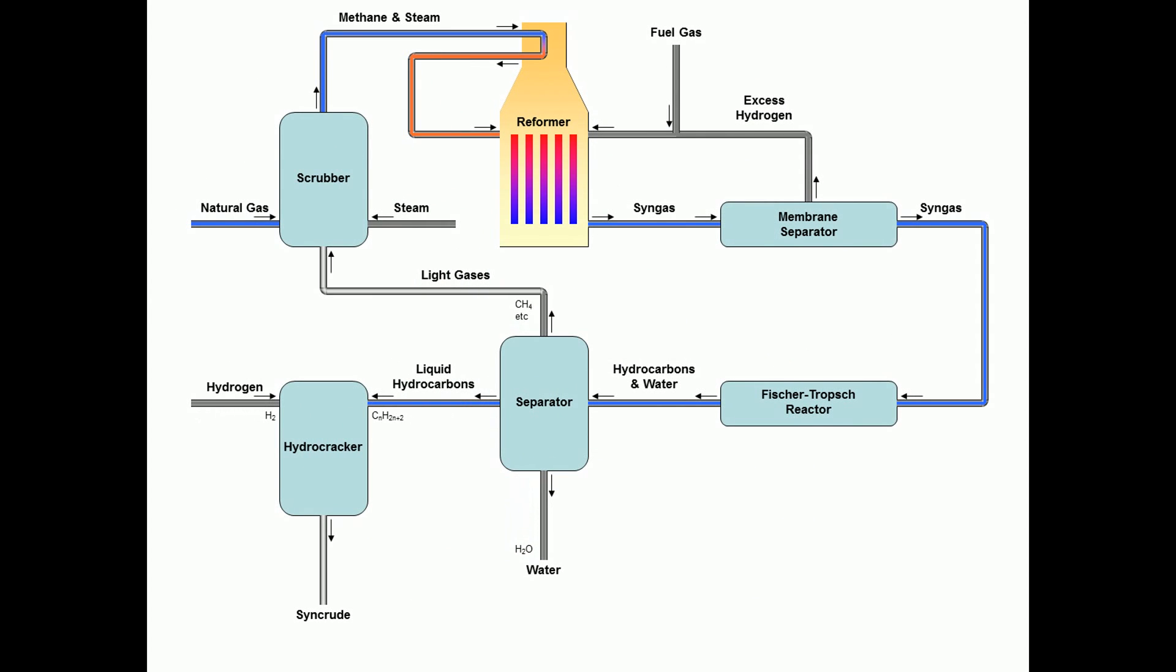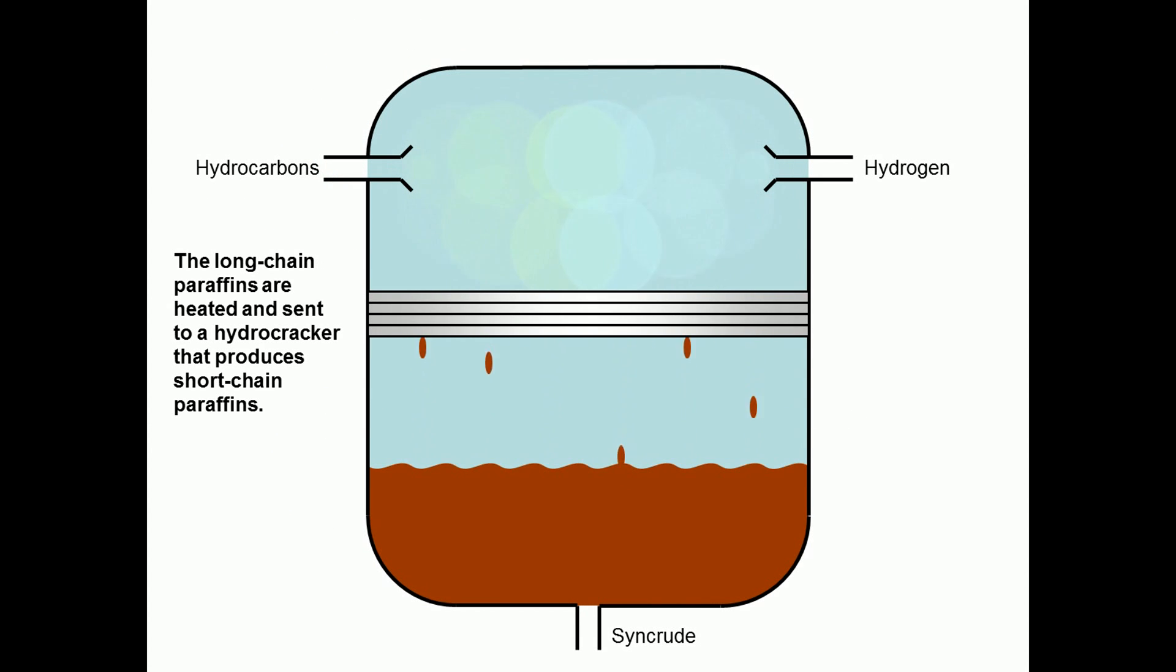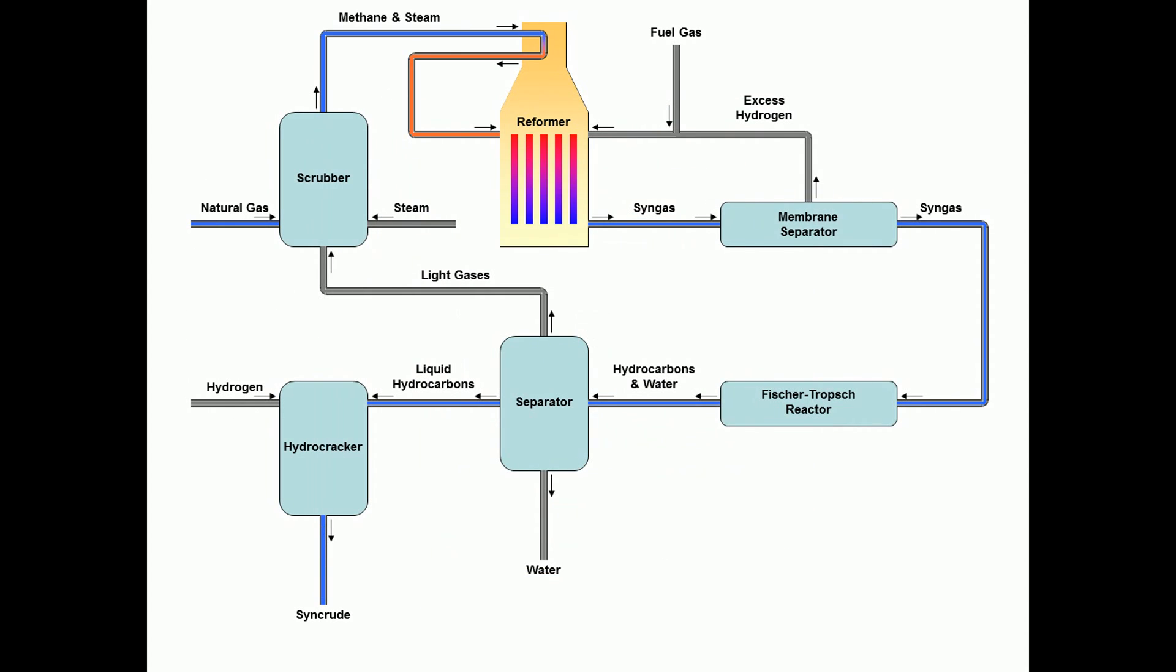The last step is hydrocracking. In a hydrocracker, the long-chain paraffins are heated and reacted with hydrogen to form short-chain paraffins, such as jet fuel, diesel, and gasoline. Finally, the syncrude is stored.